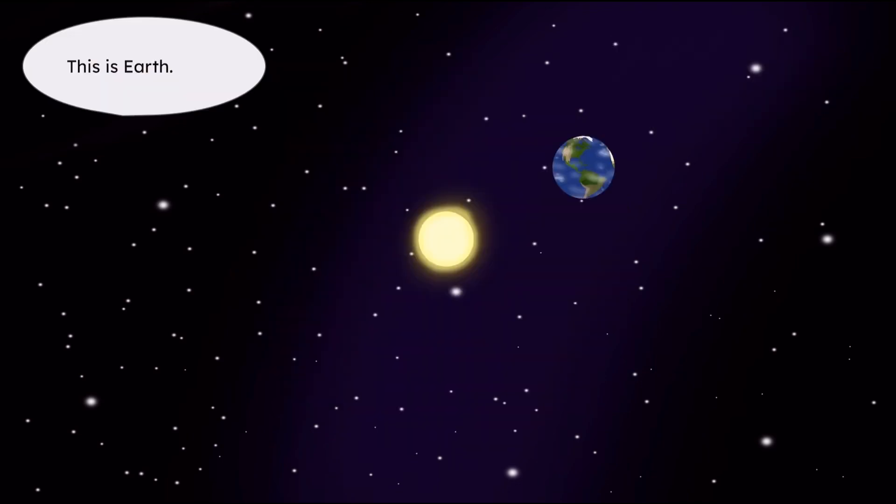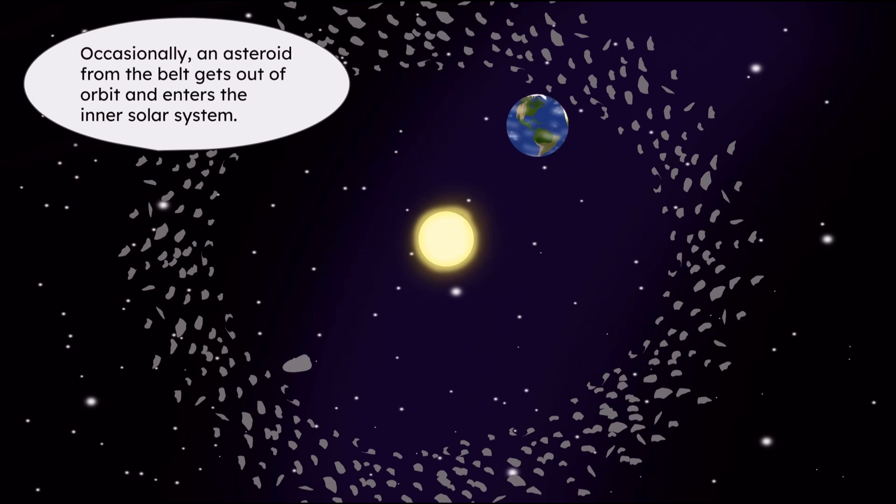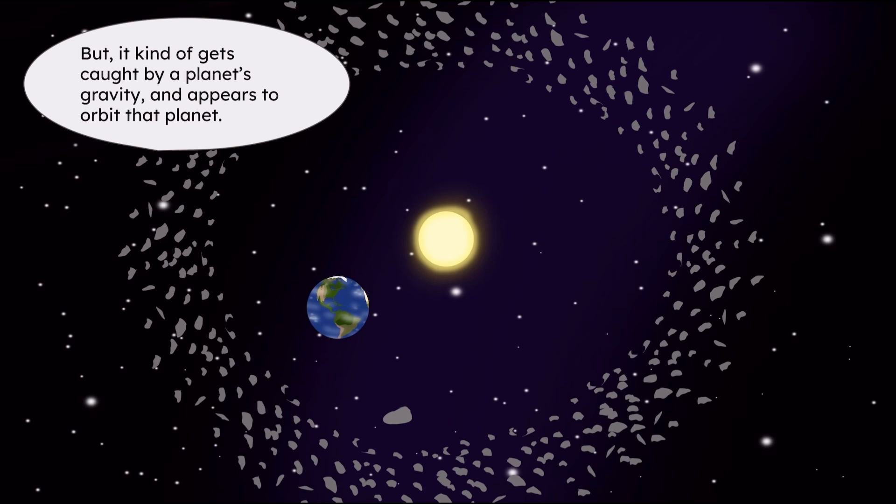This is the sun. This is Earth. And this is the asteroid belt. Occasionally, an asteroid from the belt gets out of orbit and enters the inner solar system, and orbits around the sun. But it kind of gets caught by a planet's gravity and appears to orbit that planet.